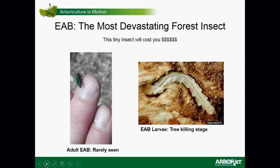Emerald Ash Borer — that's the adult insect on my finger, so not very large. On the left is the adult, and on the right is the tree-damaging phase, which is the larval stage. That's something you'll never see unless you peel away the bark and look inside the ash tree. That's the stage of the insect doing all the damage to the trees, cutting off its ability to translocate water.